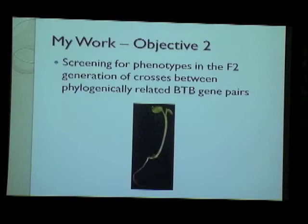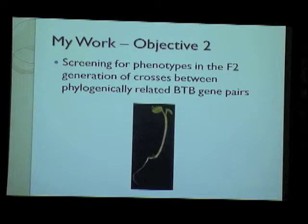Since that didn't work out, we decided to screen for phenotypes in the F2 generation of crosses between phylogenetically related BTB gene pairs. From the phylogenetic tree, we picked out closely related genes, made double mutants, and in the F2 generation of those crosses expected Mendelian segregation. We then looked for interesting phenotypes in those F2 plants.